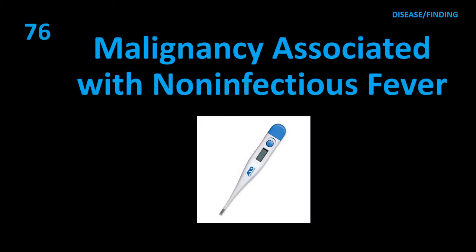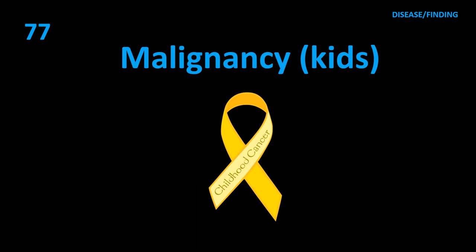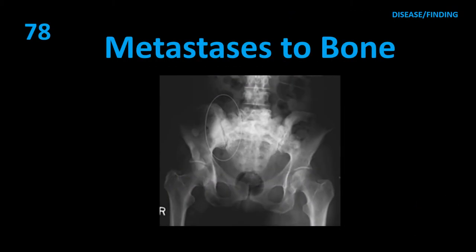Item 76: Malignancy associated with non-infectious fever — Hodgkin lymphoma. Item 77: Most common malignancy in kids — leukemia (ALL). Also notable: neuroblastoma (cerebellum).